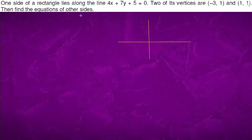This is the coordinate axis. If x is 0, y is negative. If y is 0, x is negative. So this is the line.